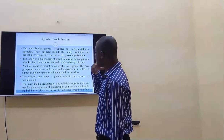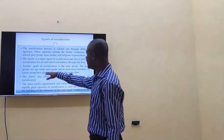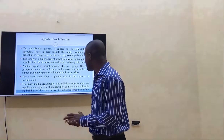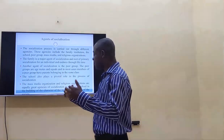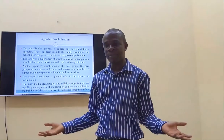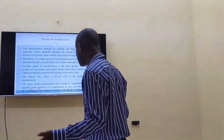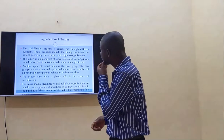The agents of socialization — the socialization process is carried out through different agencies. These agencies include the family institution, the school, the peer group, mass media, and religious organizations. The family is a major agent of socialization. The friends you keep, the church or mosque you attend, and the groups you belong to are also agents. Mass media — radio and television — are all processing avenues and agents through which you get socialized.